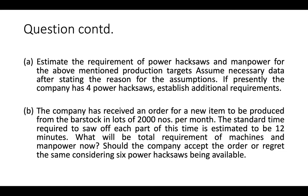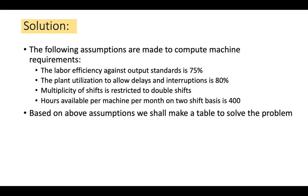There are two parts to this question. First, with 4 power hexos available, determine any additional requirement. Second, with an additional order of 2,000 pieces and 6 hexos available, determine if additional machines are needed or whether the company should send a regret.